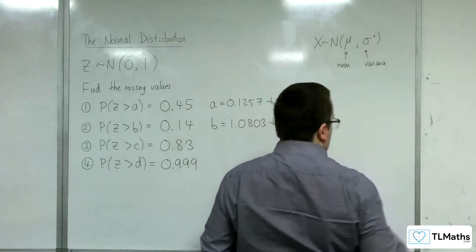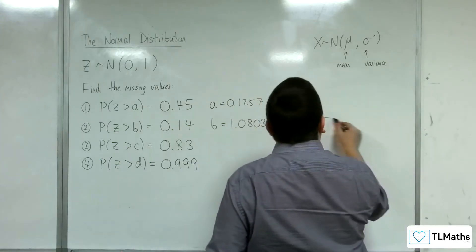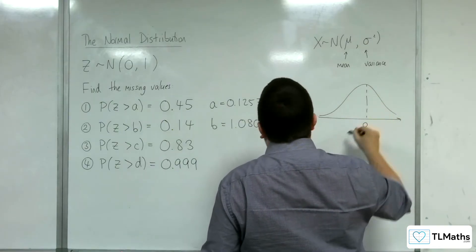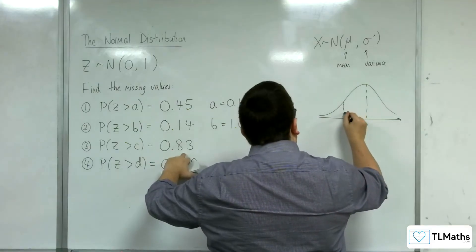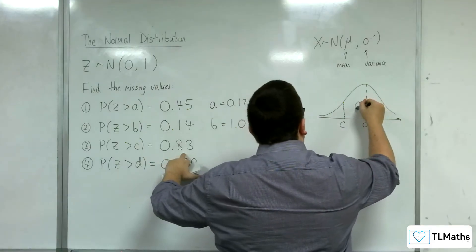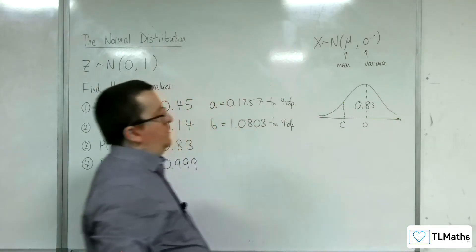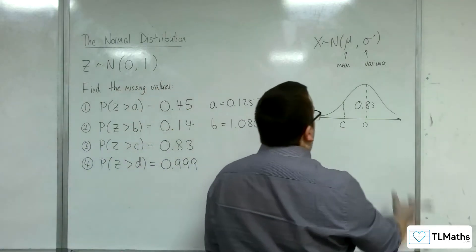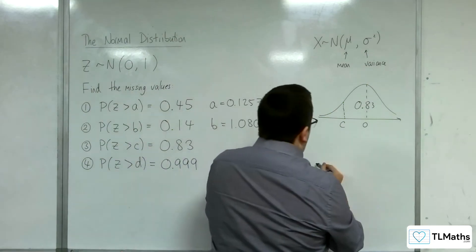For number 3, the area to the right of C is 0.83. So C must be to the left of the mean for that area to be 0.83. Once again, I can't look up 0.83 directly on my calculator.